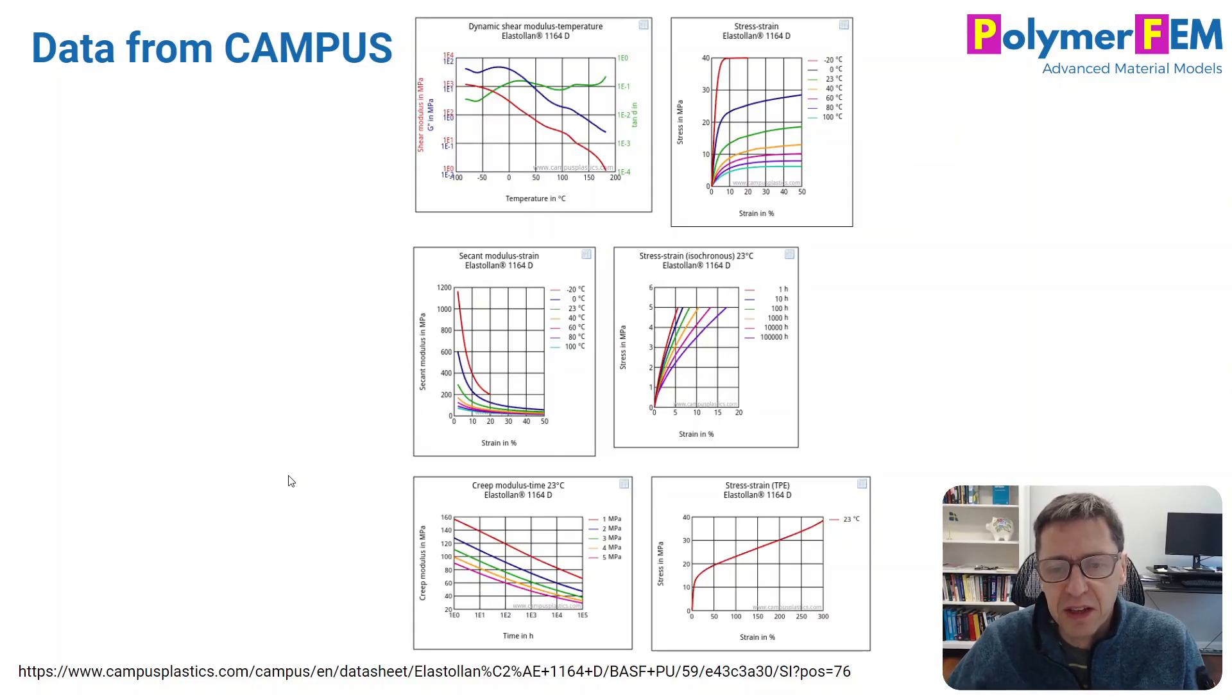But for some materials, you have tables and graphs like this. You can see DMA data as a function of temperature, etc. What I'm going to use in my example today is stress-strain data at room temperature and creep modulus data as shown at the bottom here.